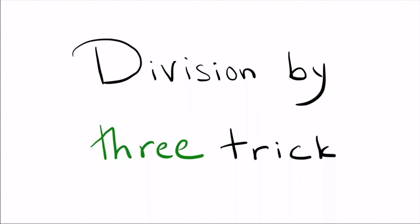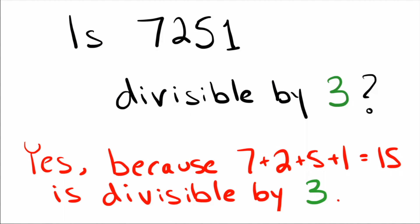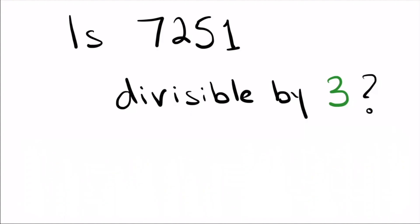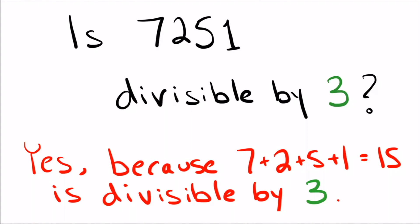Let's start looking at an example first. Say you take the number 7,251 and you want to know if it's divisible by 3 or not. Well, what the trick says is just take all the digits, 7, 2, 5, and 1, and add them up. And here that gives us 15. It says if that number is divisible by 3, then so is the original number. 7 plus 2 plus 5 plus 1 gives us 15, which is divisible by 3, so that means the original number is as well.